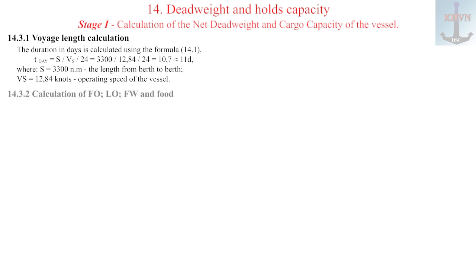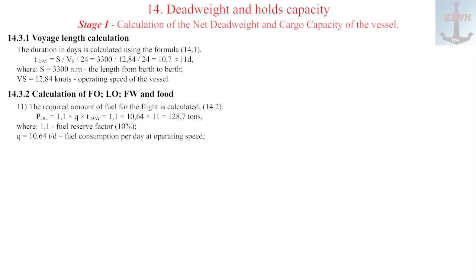14.3.2 Calculation of fuels and lubricants, fresh water and food for the voyage. 1. The required amount of fuel for the passage is calculated, formula 14.2. Result equals 128.7 tons. There are 152.4 tons of fuel on board. That there is enough for the voyage, without additional bunkering.